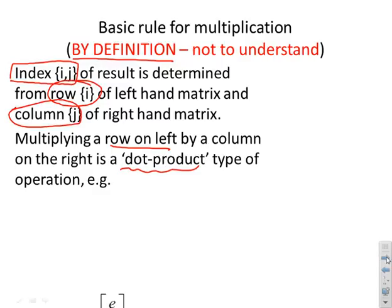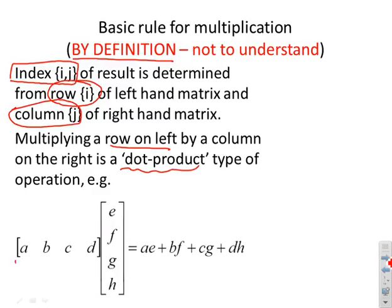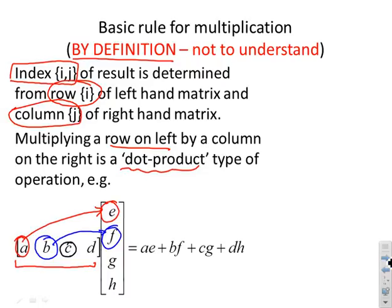Here's an example. On the left we have a row [a, b, c, d] and on the right a column [e, f, g, h]. The definition of multiplication is: the first element of the left-hand row multiplies the first element of the right-hand column; the second multiplies the second; the third multiplies the third; and the fourth multiplies the fourth. The result is ae + bf + cg + dh. The important thing is to recognise this is a definition.